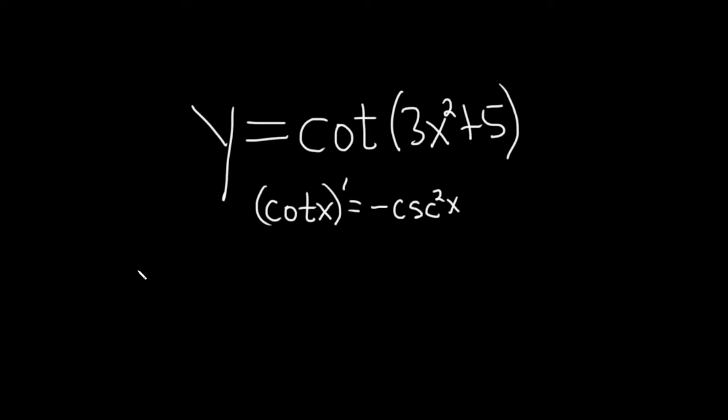The reason is, to do this problem we are going to use the chain rule. The chain rule says that we take the derivative of the outside, so in this case it's the derivative of cotangent, and we leave the inside alone.